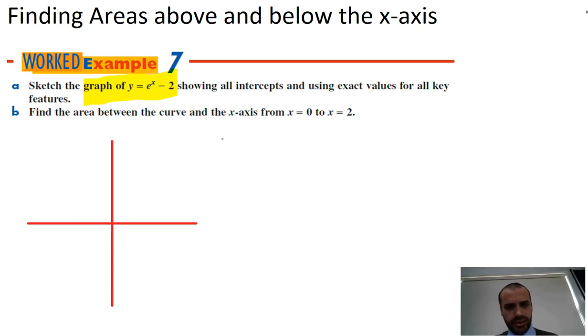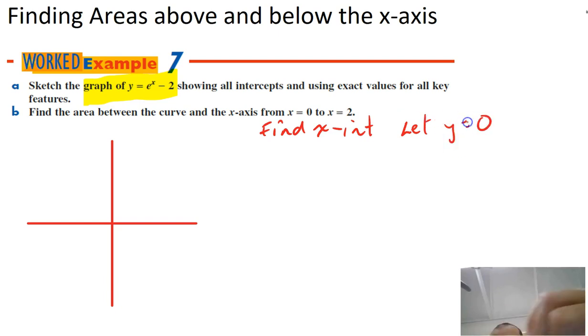Alright, so let's find out some key points, x-intercepts and y-intercepts. So I'm going to find the x-intercept by letting y equal 0. So 0 equals e to the x minus 2, which means that 2 equals e to the x.